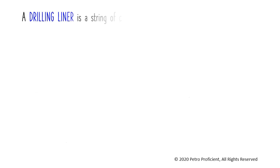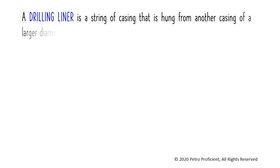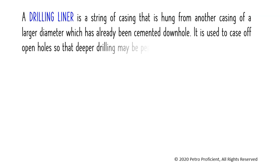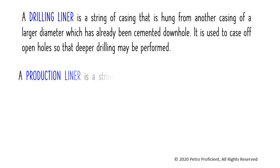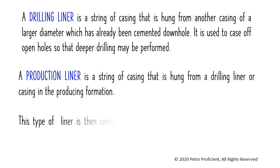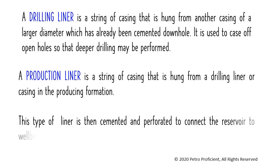A drilling liner is a string of casing that is hung from another casing of a larger diameter which has already been cemented downhole. It is used to case off open holes so that deeper drilling may be performed. A production liner is a string of casing that is hung from a drilling liner or casing in the producing formation. This type of liner is then cemented and perforated to connect the reservoir to the wellbore.